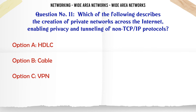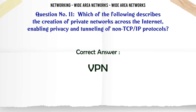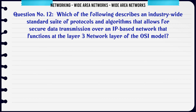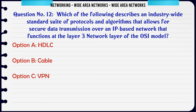Which of the following describes the creation of private networks across the Internet, enabling privacy and tunneling of non-TCP/IP protocols? A. HDLC. B. Cable. C. VPN. D. IPsec. The correct answer is C: VPN.